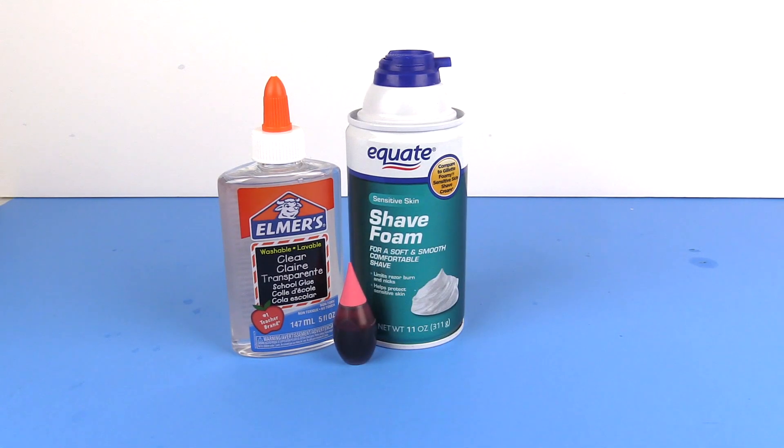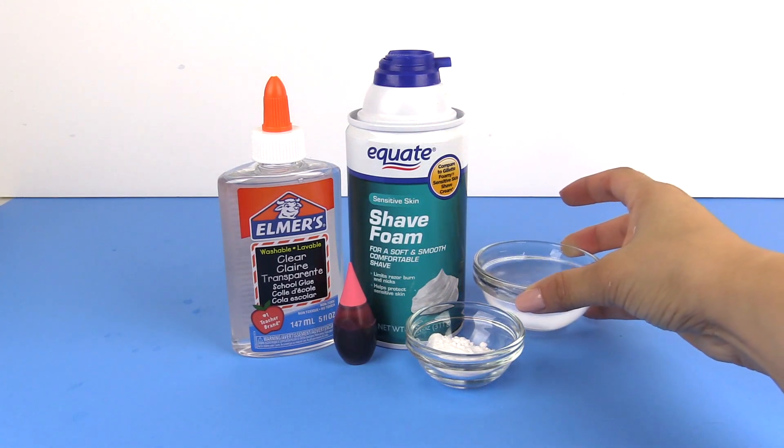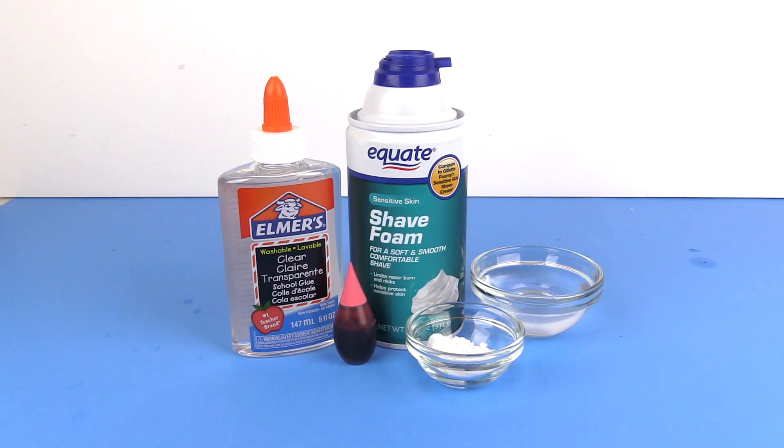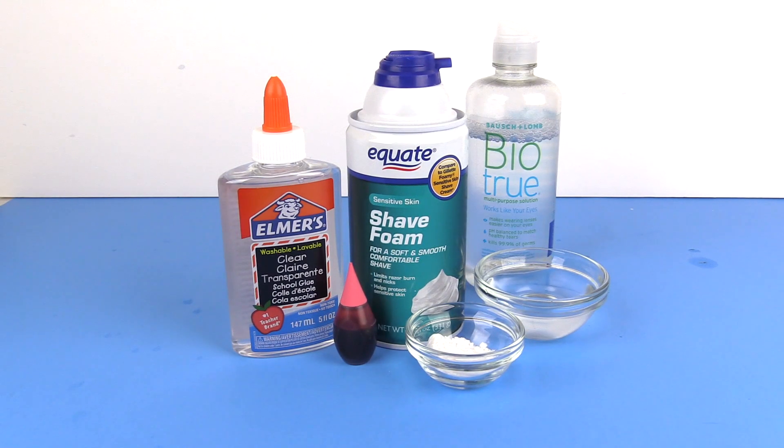A few drops of food coloring. One teaspoon of baking soda. One fourth cup of water. And some contact solution. Now let's get started and make this amazing slime.